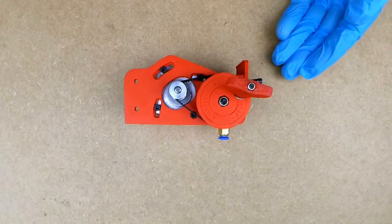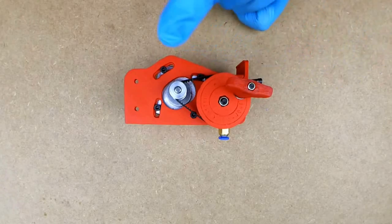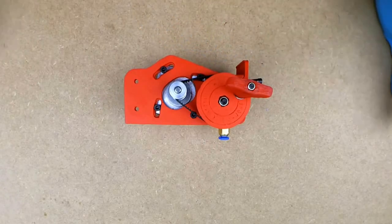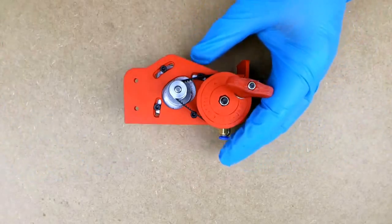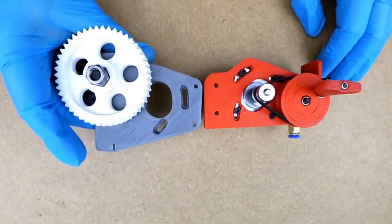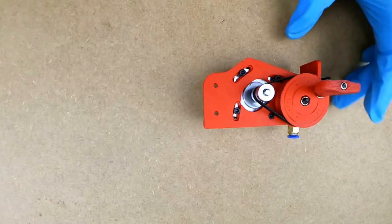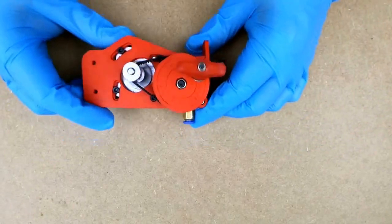That new extruder is composed with common parts you can get anywhere from internet. This is a compact model, here it is compared to a standard Wade's extruder. But it's also pretty stiff and strong.